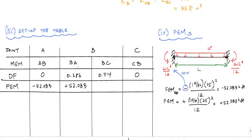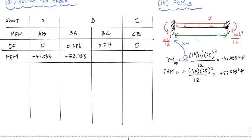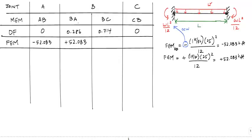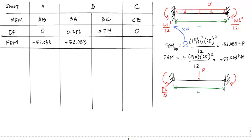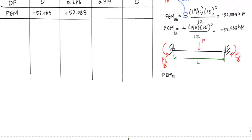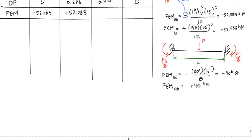Now we repeat the same process for member BC, which has a concentrated load at midspan. For a fixed-fixed beam with a midspan concentrated load, each end moment has a magnitude of PL/8. So FEM_BC equals negative 20 kips times 16 feet divided by 8, which is negative 40 kip-ft, and FEM_CB is positive 40 kip-ft. I'll put those in the table: negative 40 and positive 40.